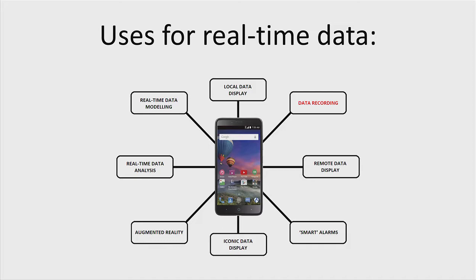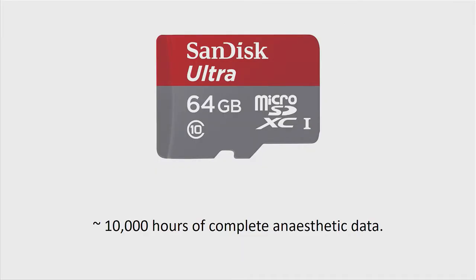The second thing you can do with data once the phone has it is to record it. Although it's big data, you can get an awful lot on a mobile phone. I do about 250 hearts a year — ballpark, about 1,100 hours of anesthesia in cardiac surgery a year — and I can get 10,000 hours onto a single 64 gigabyte micro SD card that goes in this phone.